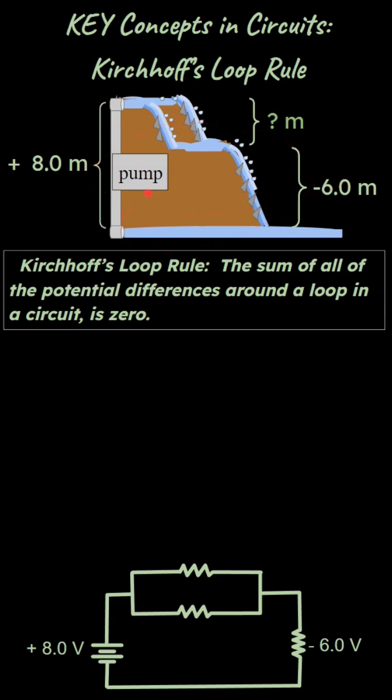So if we have an analogy here, a waterfall analogy, where a pump has a positive 8 meter gain for the water and then there are two parallel waterfalls over here and then another waterfall of minus 6 meters over here, the question could be what do you think the height loss for these waterfalls is going to be?